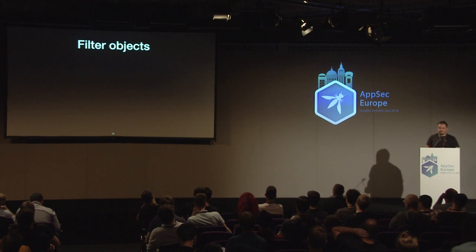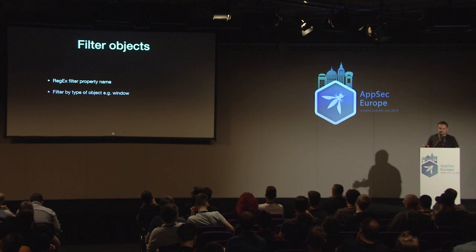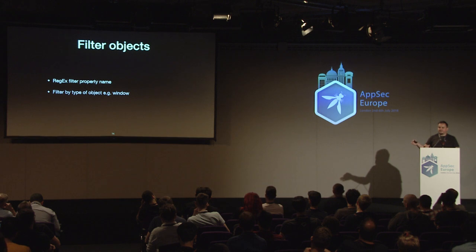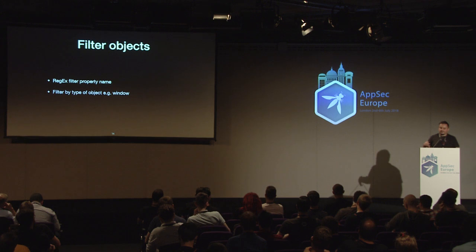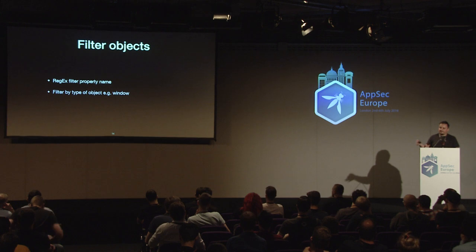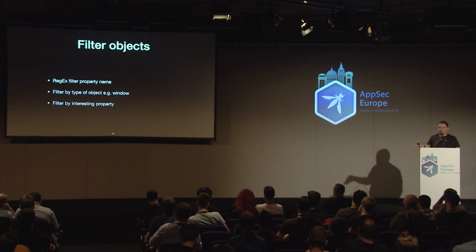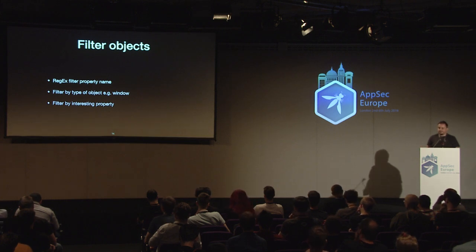You can filter the results by regex on property name, or by the type of object — which is really interesting for hacking JavaScript. For example, the browser might add a new property called 'global.' From a JavaScript hacker's point of view, it's useful to know which objects are windows and their property values. You can filter by 'interesting' with a simple checkbox to show the most interesting stuff first.